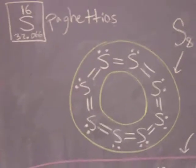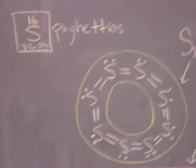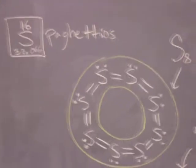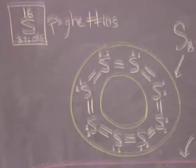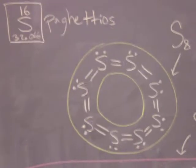And in this form, they kind of look like pasta rings, SpaghettiOs. When you open up a can of SpaghettiOs before you heat it up on the stove, it's a clump. Same thing with my sulfur atoms.